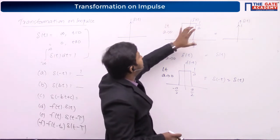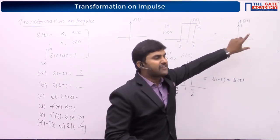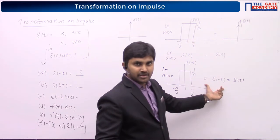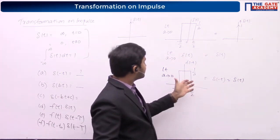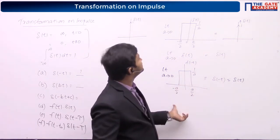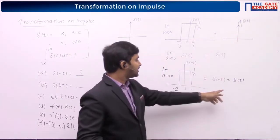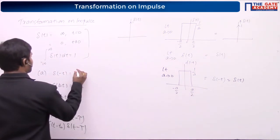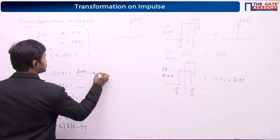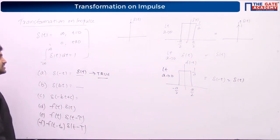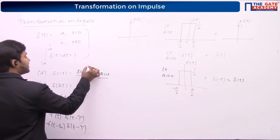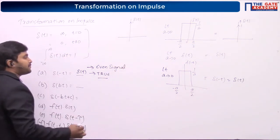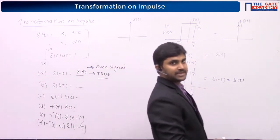So del(-t) is equal to del(t). Can I call the impulse function an even signal? Yes, the impulse signal is an even signal. The next operation we are going to do is a scaling operation.